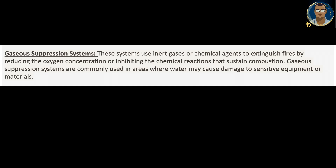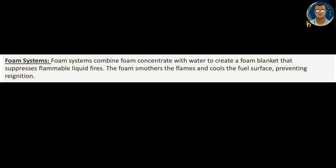Gaseous suppression systems use inert gases or chemical agents to extinguish fires by reducing the oxygen concentration or inhibiting the chemical reactions that sustain combustion. Gaseous suppression systems are commonly used in areas where water may cause damage to sensitive equipment or materials. Foam systems combine foam concentrate with water to create a foam blanket that suppresses flammable liquid fires. The foam smothers the flames and cools the fuel surface, preventing re-ignition.